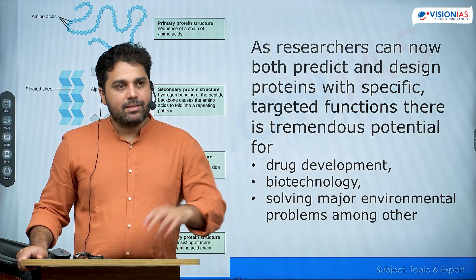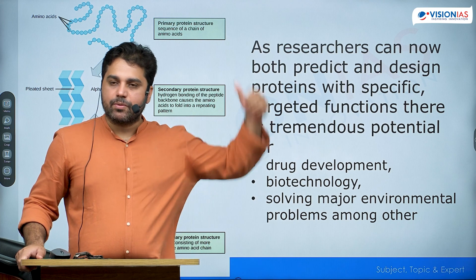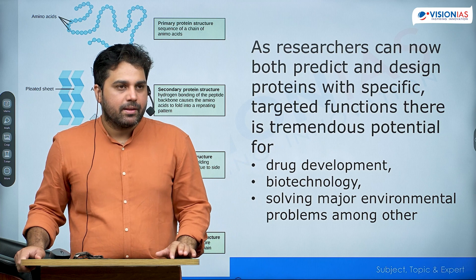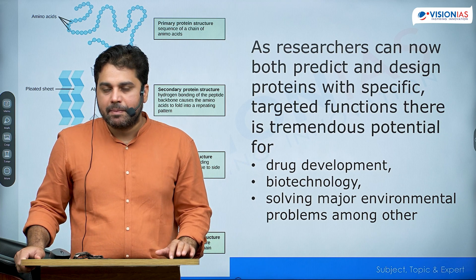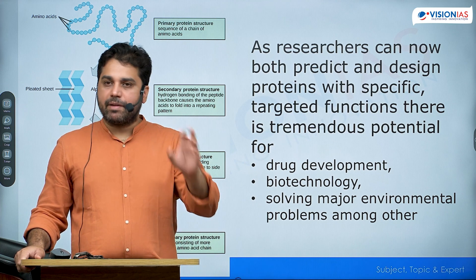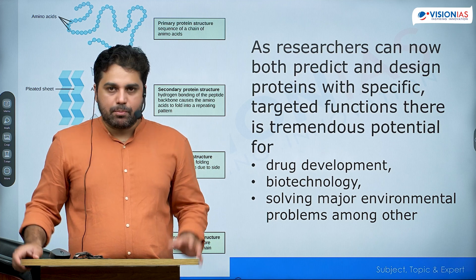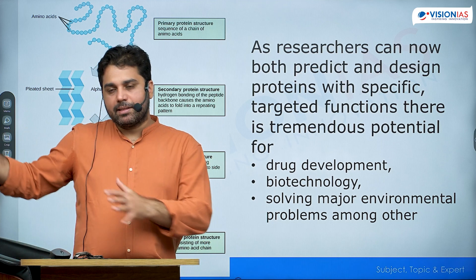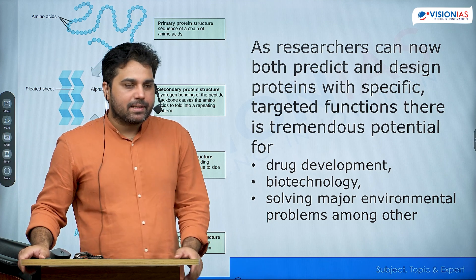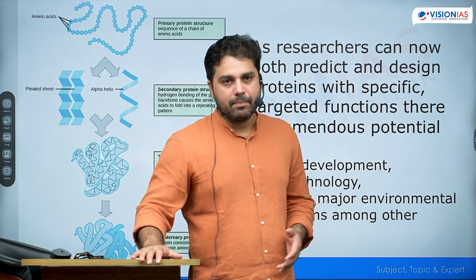What this team did was use an artificial neural network — they used artificial intelligence. DeepMind is Google's very famous AI project, and they have their own branch called DeepMind. DeepMind has many AI tools. One of them is AlphaFold, and another is AlphaGo.